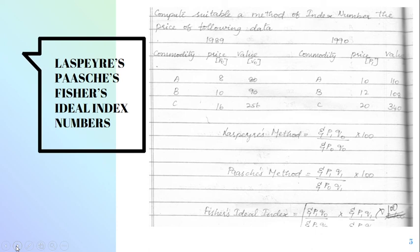The Laspier's method says sigma P1Q0 by sigma P0Q0 into 100. The Paasche's method says sigma P1Q1 by sigma P0Q1 into 100.